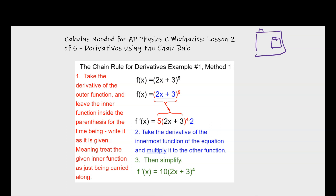We're going to start with a very simple example. Let's say our composite function is f of x equals 2x plus 3, all in parentheses to the fifth power. The first thing you want to do is think about what is the inner function and what is the outer function. The inner function, labeled in blue, is that 2x plus 3, and the outer function, labeled in red, is the parentheses to the fifth power.